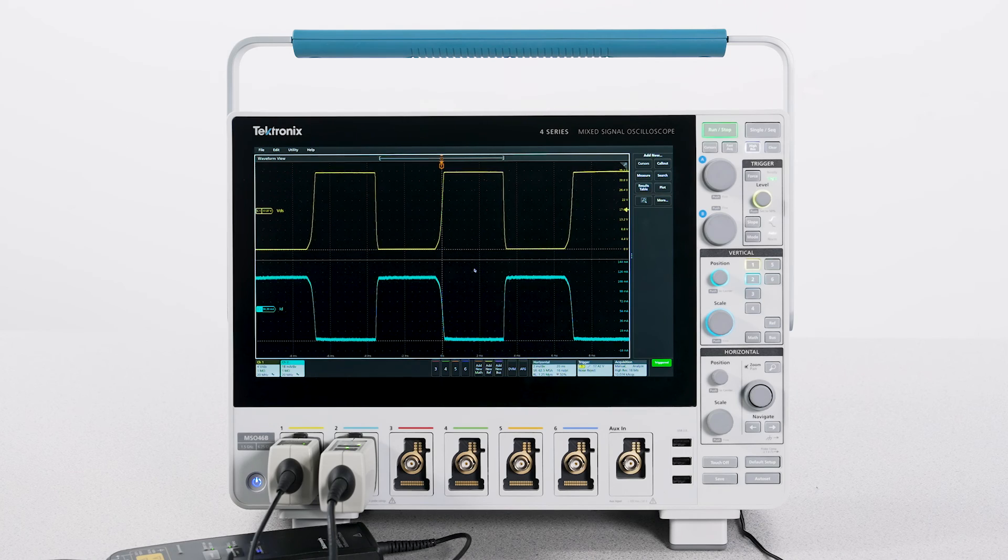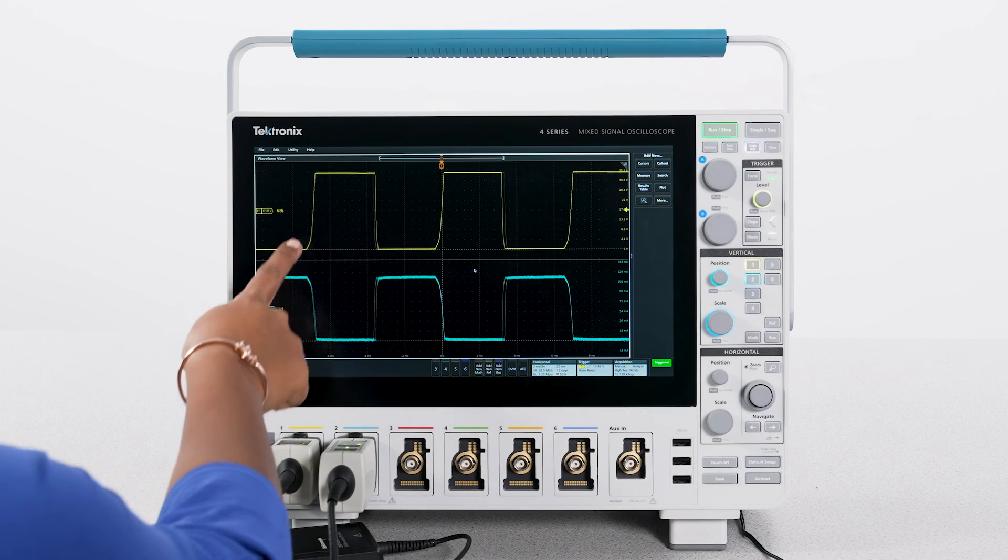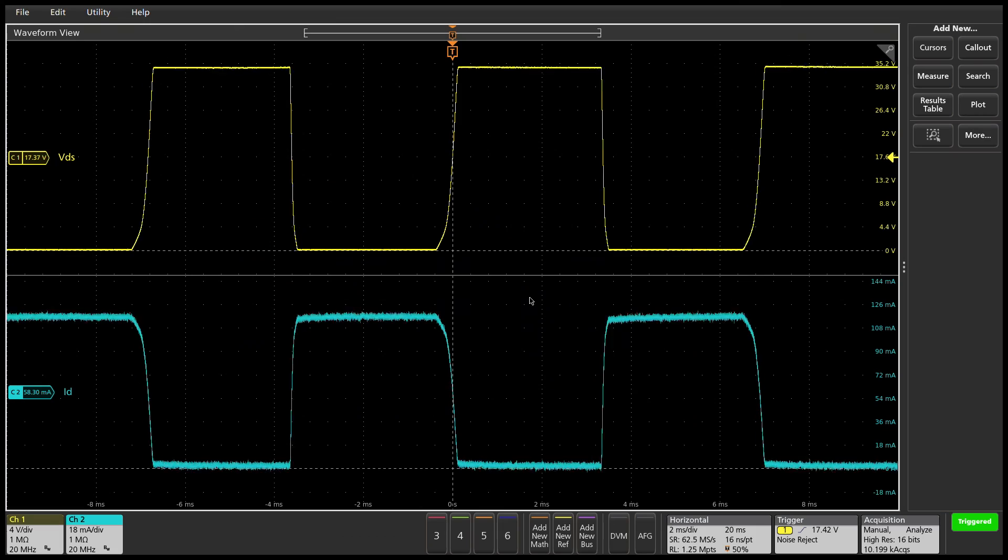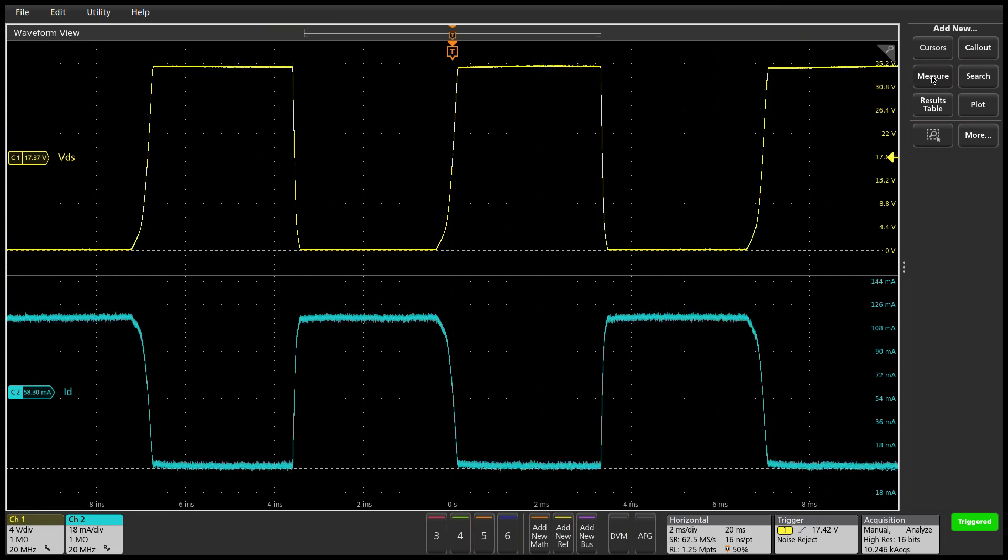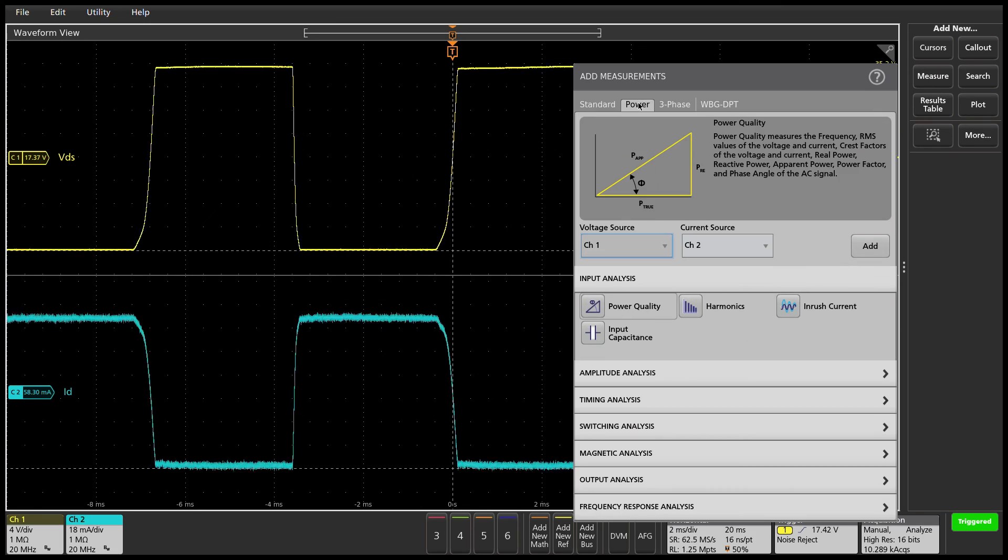The accurate calculation and evaluation of energy loss in power supplies have become even more critical with the drive toward higher efficiency and reliability. I'm measuring VDS across the switching MOSFET and the drain current. The software can measure turn-on loss, turn-off loss, and conduction loss.